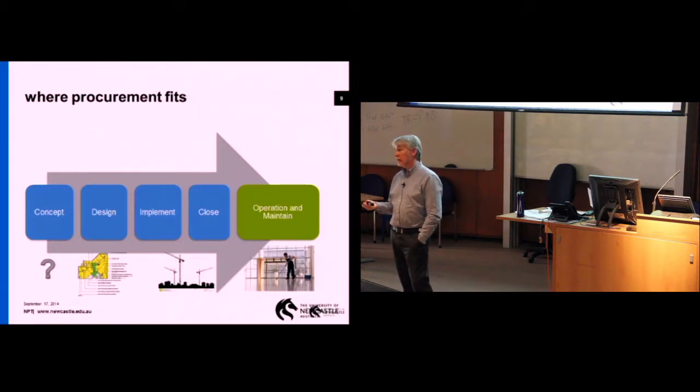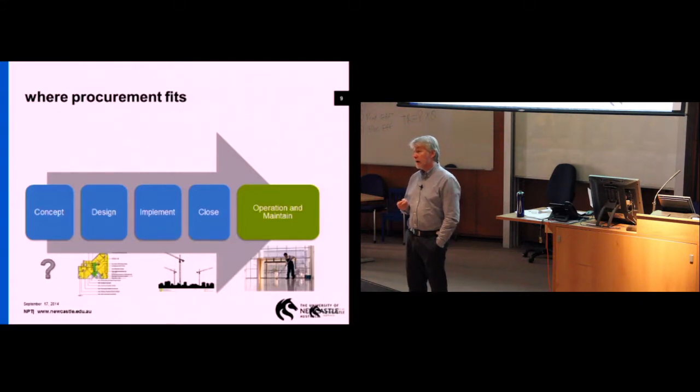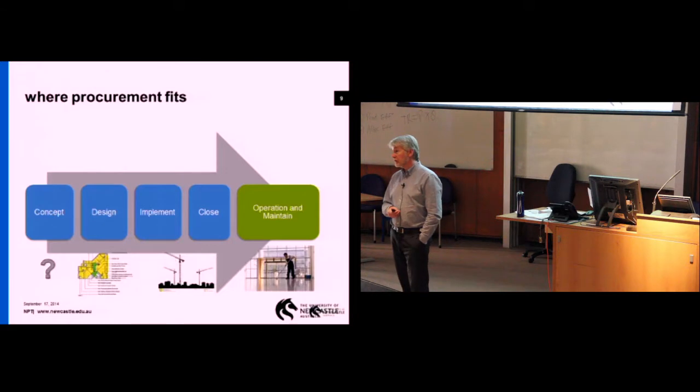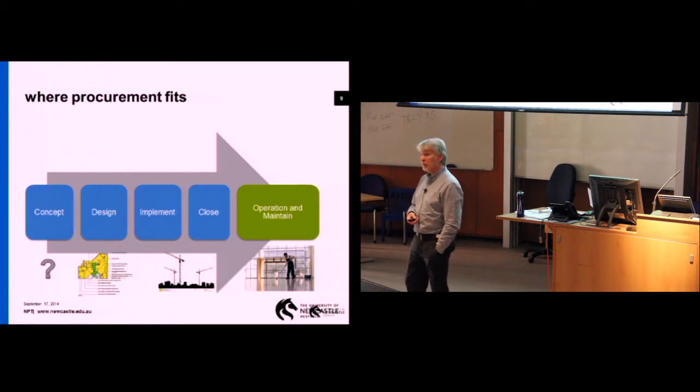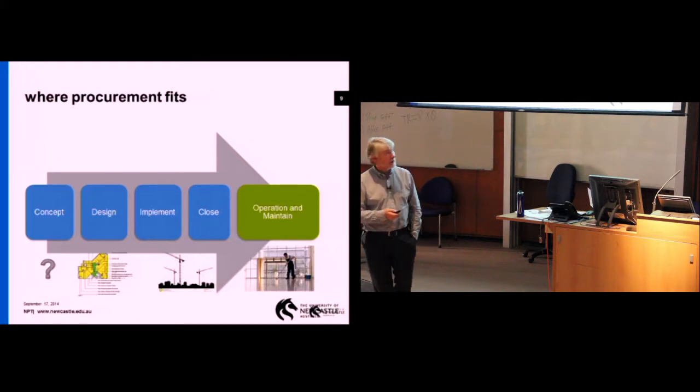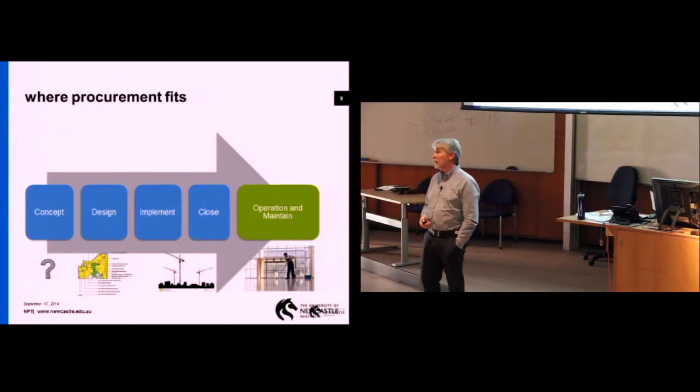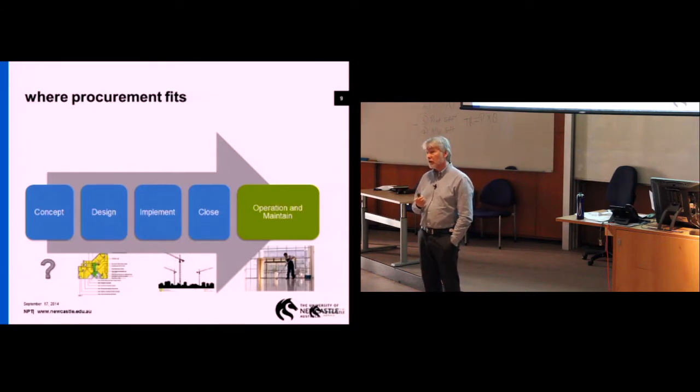Nowadays, we're finding that procurement is moving much more into a whole life of projects. That's why in this slide, I've identified that green area, which is extended somewhat, in the operation and maintenance phase. If you think about a public-private partnership, for example, there are many examples around the country now. I know that the Maitland Hospital here in Newcastle is an example of a public-private partnership, probably one of the first in Australia.